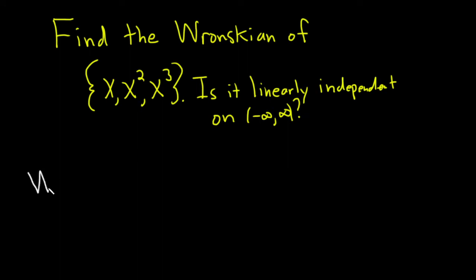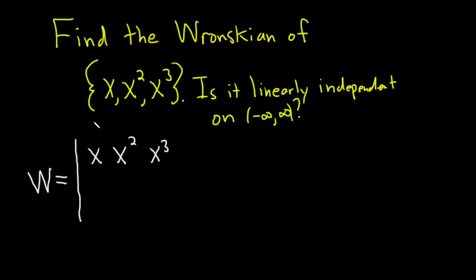The Wronskian of these functions is given by the determinant of a matrix. In the first row you write the functions: x, x squared, x cubed. In the second row you take the derivative. The derivative of x is 1, the derivative of x squared is 2x, and the derivative of x cubed is 3x squared — just using the power rule, bring down the 3, subtract 1.